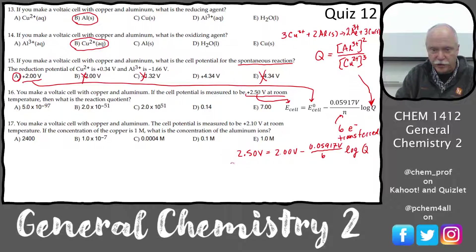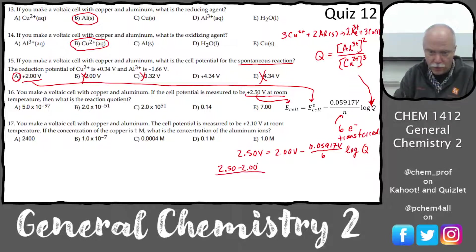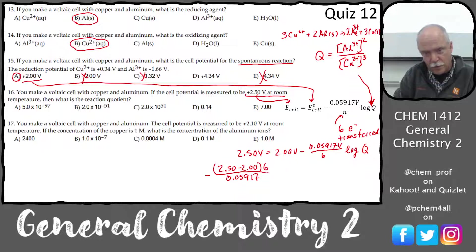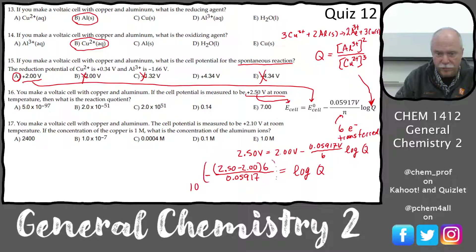Moving everything over: I moved the 2.00 over and subtracted it, then divided by the 0.05917/6 piece — so 0.05917 goes on the bottom and the 6 goes on top — and that equals log Q. Then I take 10 to both sides, which kills the log, and that equals Q.